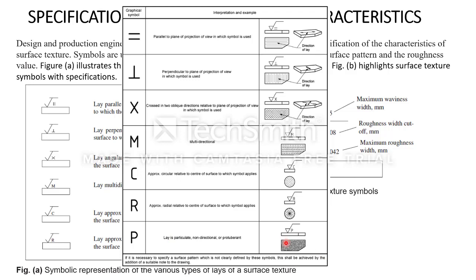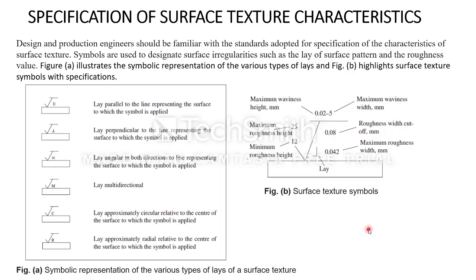One more thing, lay is particulate, not directional or protuberant, means it is like dots, it will particulate, it will be finer process manufacturing. Here it is necessary to specify the surface pattern which is not clearly defined by these symbols. This shall be achieved by the addition of a suitable note to the drawing. Like we can represent, if you are not clear with this, you can additionally represent a note over the blueprint or the drawings. Here you can observe that maximum waviness can be represented here over this symbol representing the surface texture of a particular job.